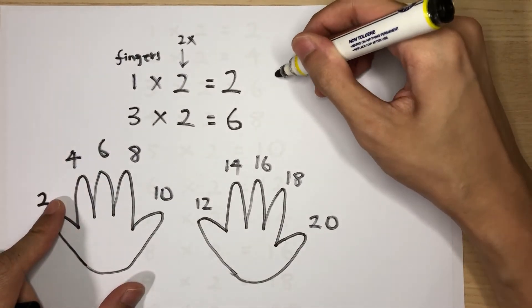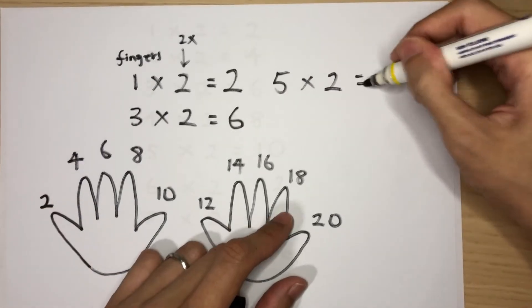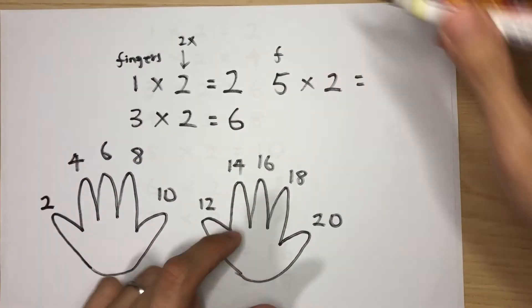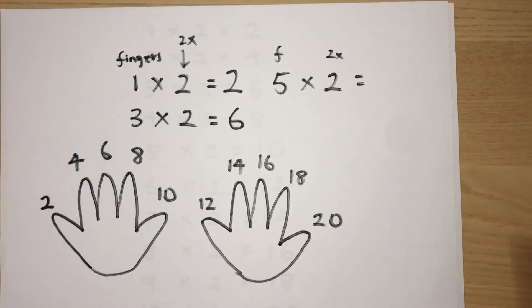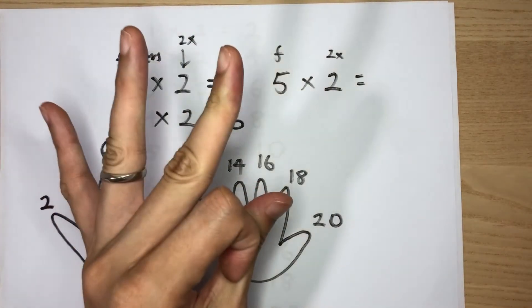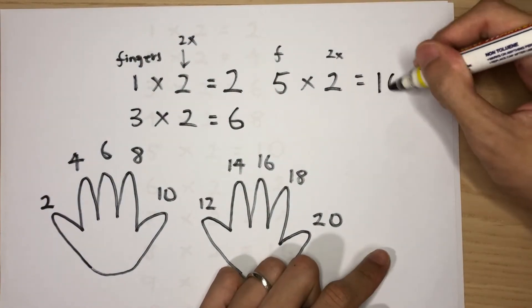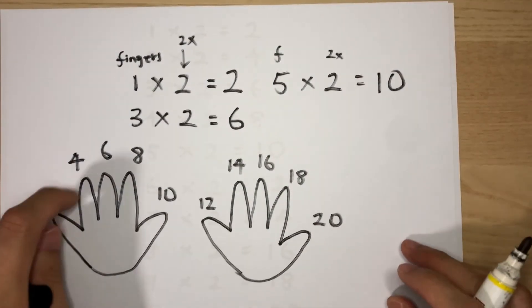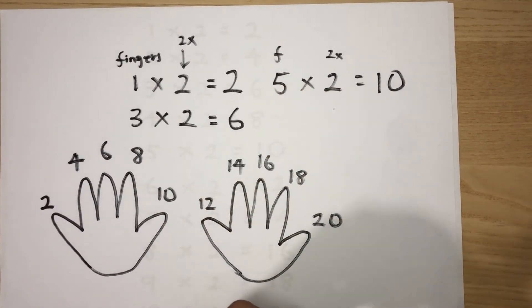Let's do yet another example together and see if you are able to do it. Let's try five times two. Remember, this is the fingers, this is the number of fingers, and this is the two times table. So do the two times table until finger number five. Two, four, six, eight, ten. So the answer is ten. Five times two will give you ten.